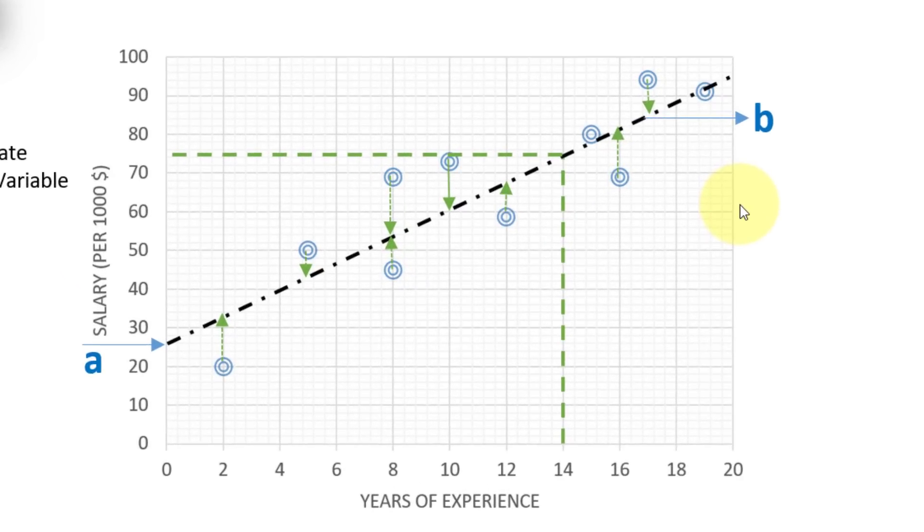Let's explain this further in this scatter plot here. Assume your x-axis is the number of years of experience starting from zero years to 20 years, which covers our data here. And then we have the corresponding salary here from zero to 100,000 US dollars per year.